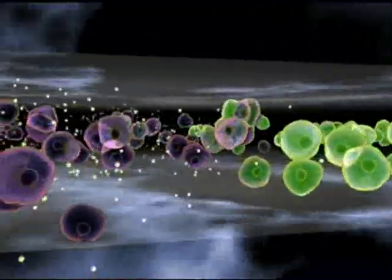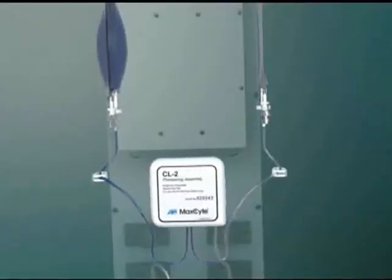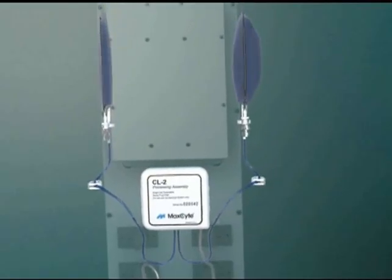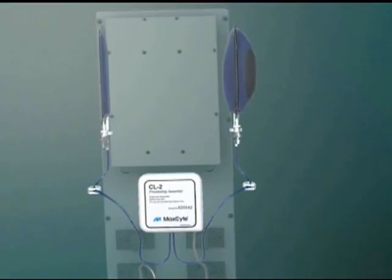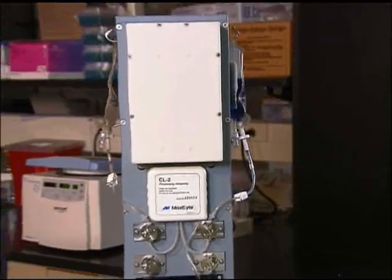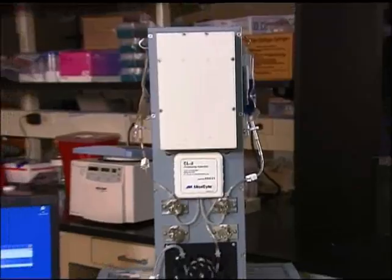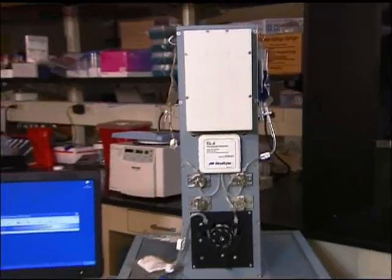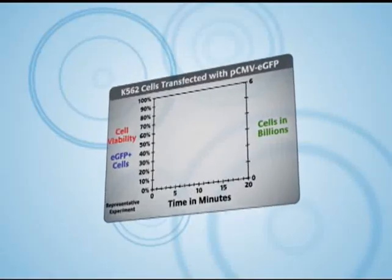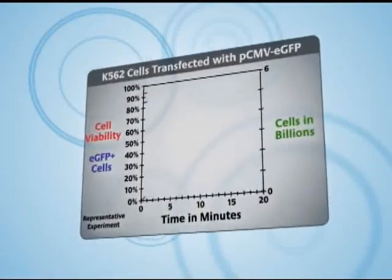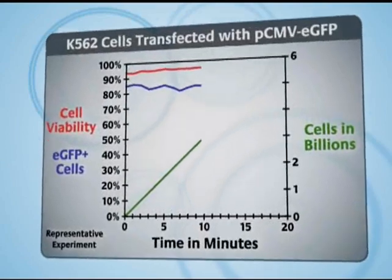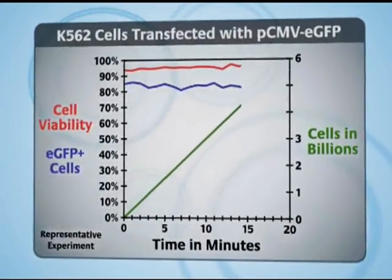Following electroporation, the transfected cells flow into the collection bag. The transfected cells are then ready to be cultured or cryopreserved. The MaxSight STX generates unparalleled consistency.